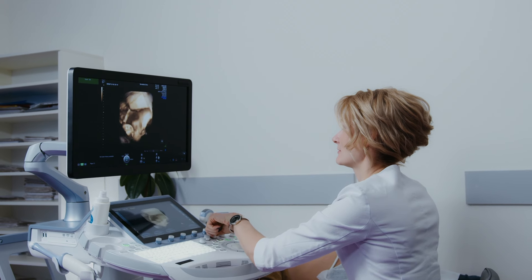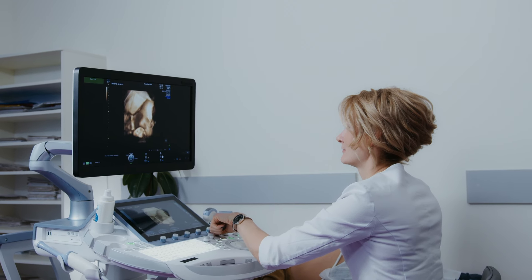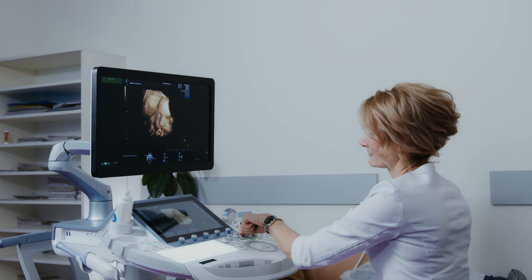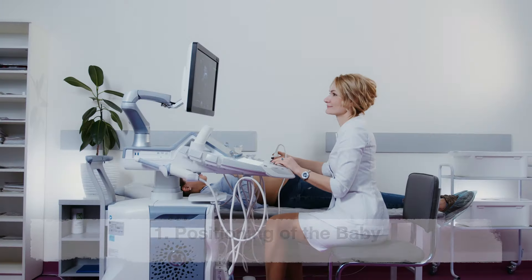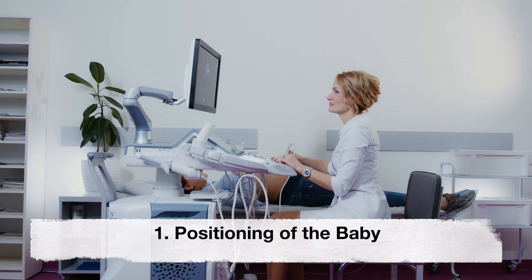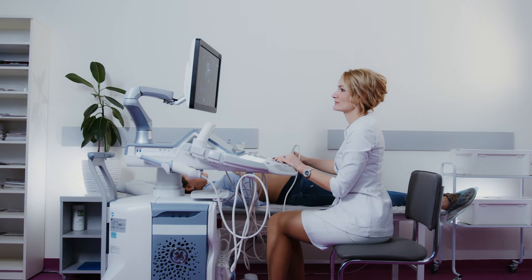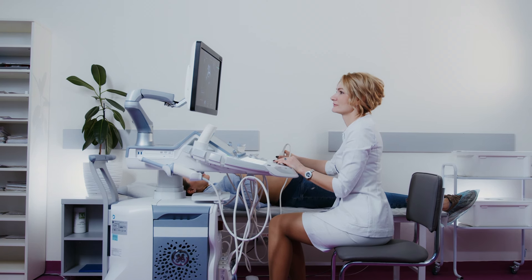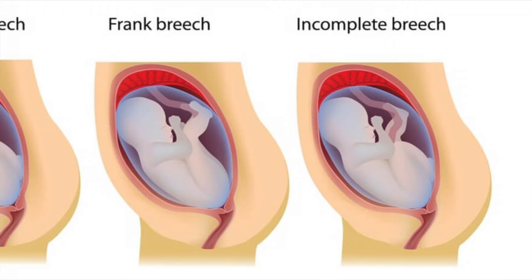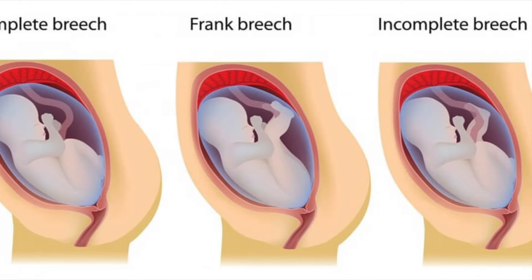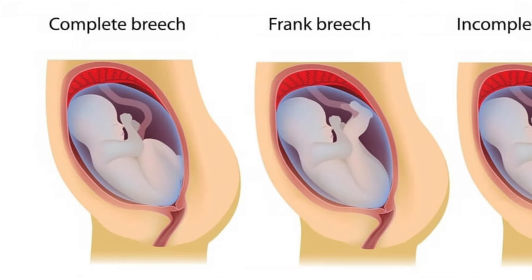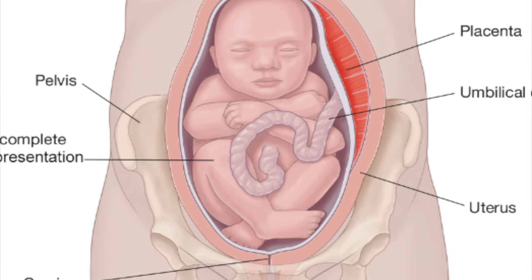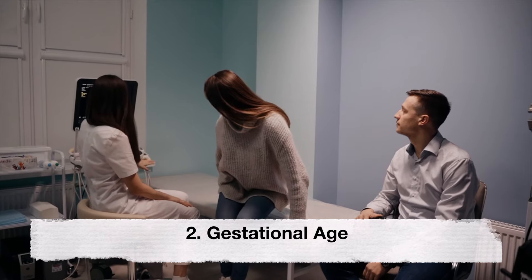While it's possible for a trained sonographer to identify the baby's genitalia during the mid-pregnancy ultrasound, several factors can complicate this process. First, the baby's position in the womb can affect the visibility of certain anatomical features. If the baby is in a breech position or has its legs crossed, it may be challenging to obtain a clear view of the genital area.